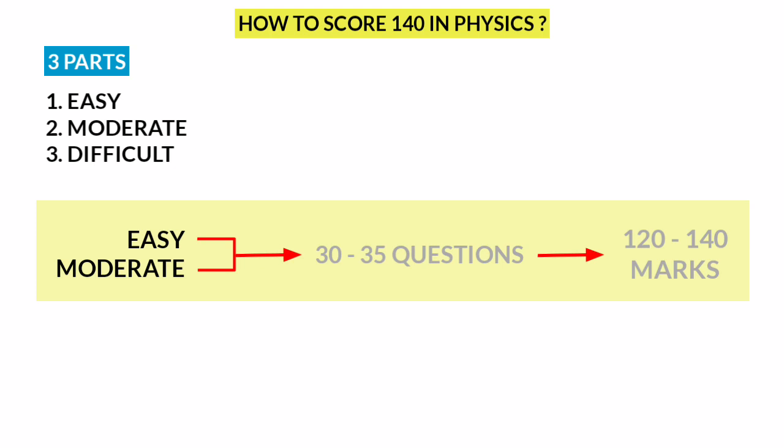Easy chapters, there are 15 to 20 questions. Moderate chapters, there are 15 to 20 questions. Total, 30 to 35 questions, that is 120 to 140 marks. So if you complete easy and moderate chapters, you can score 120 to 140 marks easily. But at the same time, don't skip difficult chapters.